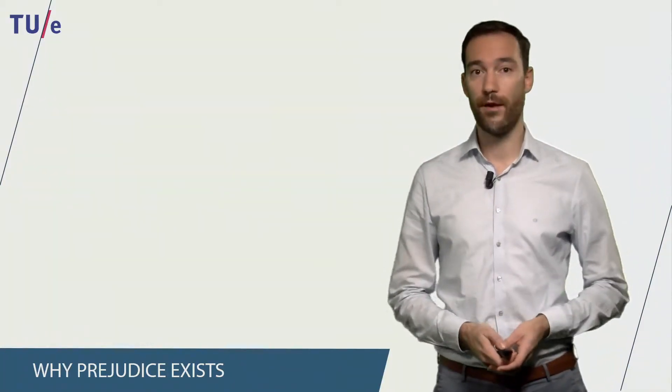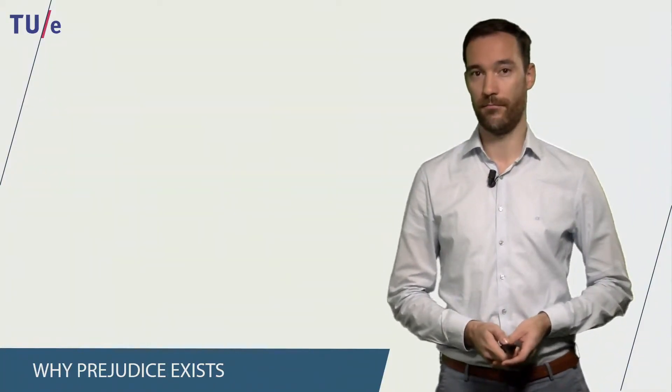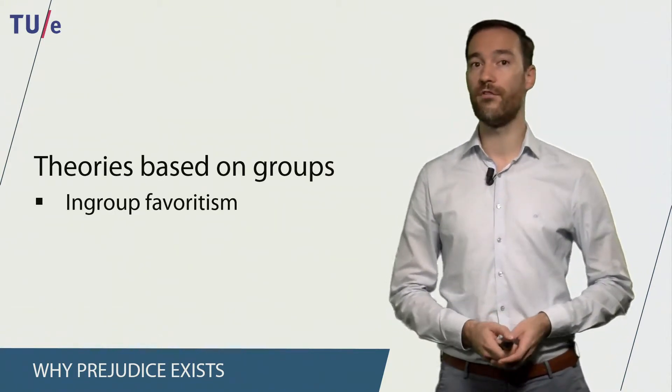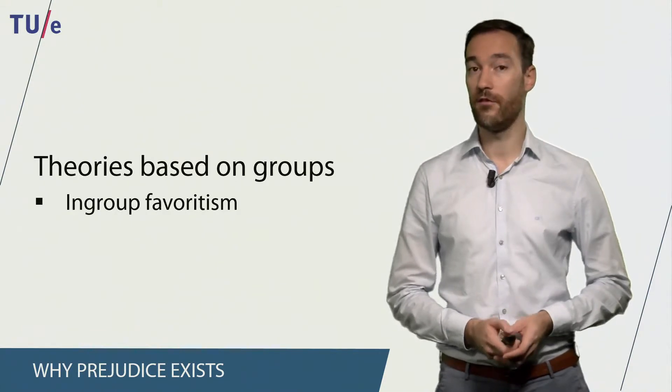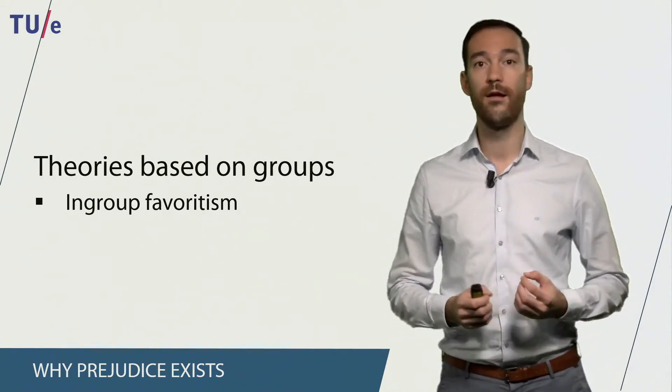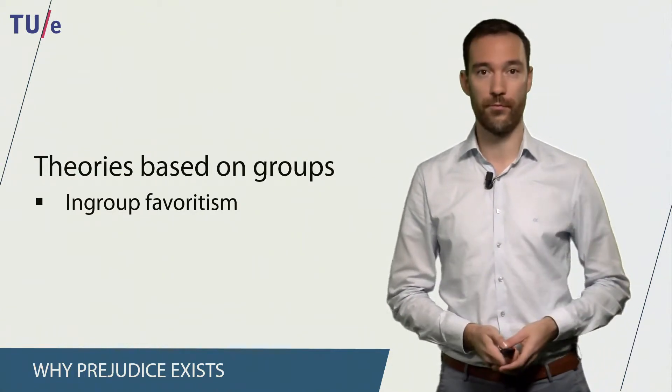Several theories can explain why prejudice exists, and some of these theories are based on groups or group membership. The first of these is in-group favoritism. This means that we tend to have positive attitudes towards people of our own group and negative attitudes towards people who belong to different groups.